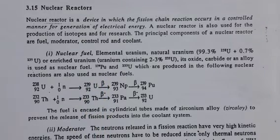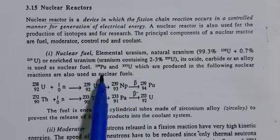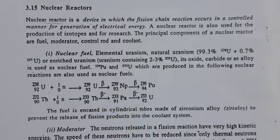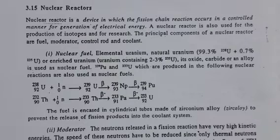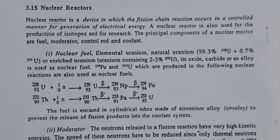Plutonium-239 and uranium, which are produced in the following nuclear reactions, can also serve as fuel. The fuel is encased in cylindrical tubes made up of zirconium alloy to prevent the release of the fission products into the coolant system.